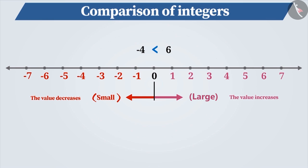That is, the number to your left side is always smaller and the number to your right side is always larger. Therefore, we can say that minus 4 is smaller than 6. Similarly, if we talk of two negative integers, like minus 2 and minus 5, then minus 2 being on the right of minus 5 is a larger number and minus 5 being on the left side of minus 2 is a smaller number than minus 2.